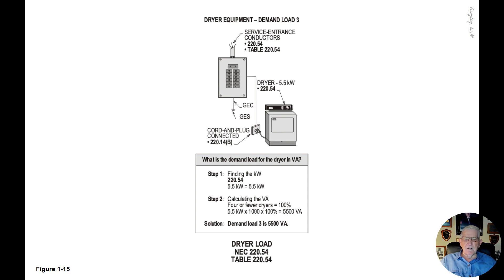The boxed question asks: what is the demand load for the dryer in VA? Step one — find the kW. Per NEC 220.54, for four or fewer dryers the minimum is 4.5 kW, but since the nameplate is 5.5 kW, we use 5.5 kW. Step two — four or fewer dryers are taken at 100%, so 5.5 kW times 100% equals 5.5 kW.